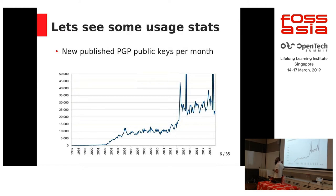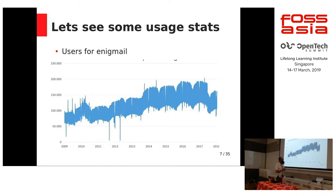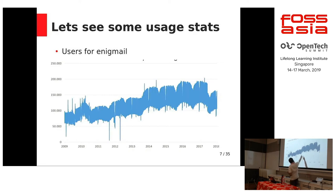2014 is the time when Snowden came out and spoke about the NSA and how they were trying to snoop on your email. This really enlightened people and everybody started creating PGP keys. We see a similar statistic in Enigma — the Thunderbird plugin for PGP. There is a similar sudden spike in 2014 in the number of people actually downloading Enigma and trying to use it.